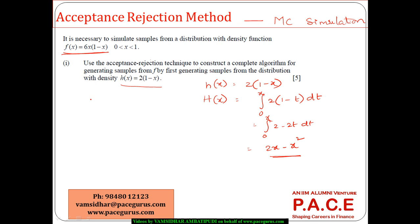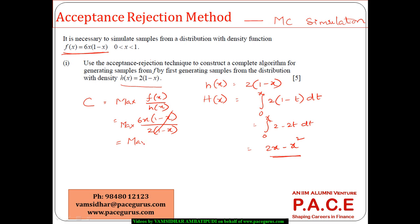Now, using the acceptance-rejection method, I need to find c, which is the maximum of f(x) divided by h(x). Here f(x) = 6x(1 - x) and h(x) = 2(1 - x), so the ratio simplifies to the maximum of 3x. Since x lies only between 0 and 1, the maximum of 3x is 3. So the value of c is 3.